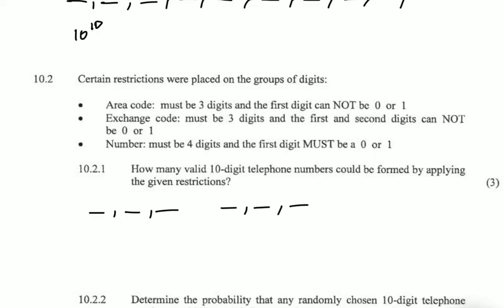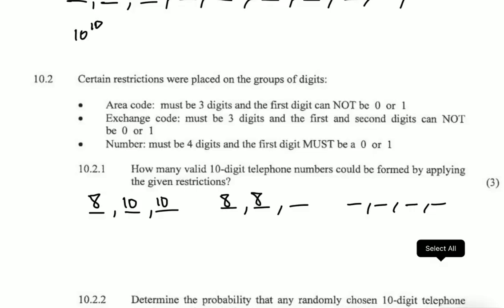For the number, we must have four digits and the first digit must be zero or one. So for the area code, the first digit cannot be zero or one, meaning we are choosing from only eight numbers — two through nine — giving eight possible numbers for the first position. The second digit has no restriction, so we have 10 possible numbers. The third digit also has 10 possible numbers. For the exchange code, the first and second digits cannot be zero or one, so we have eight possible numbers for each of those positions.